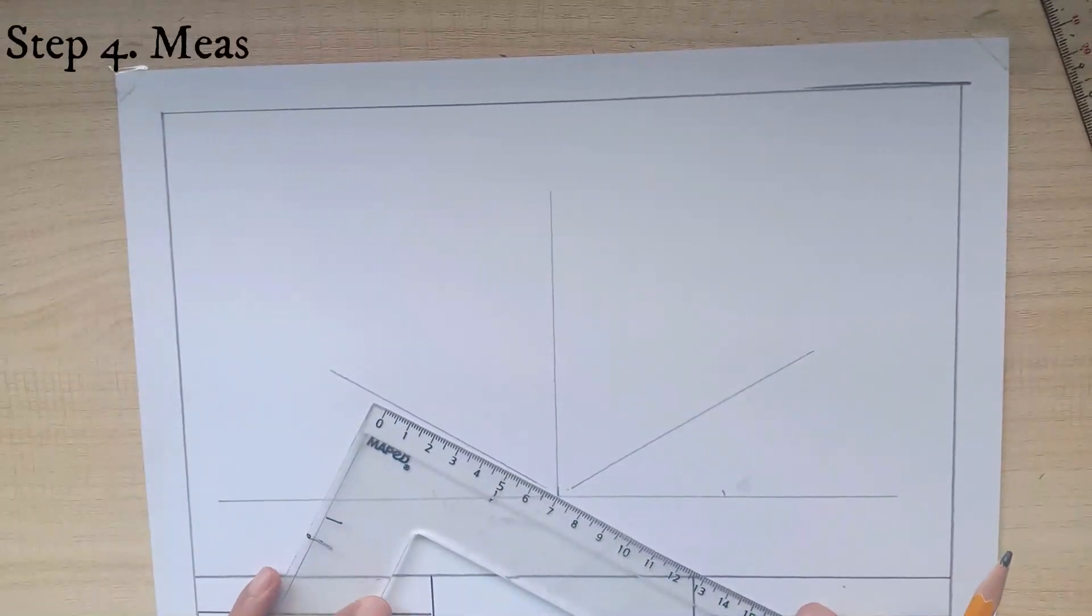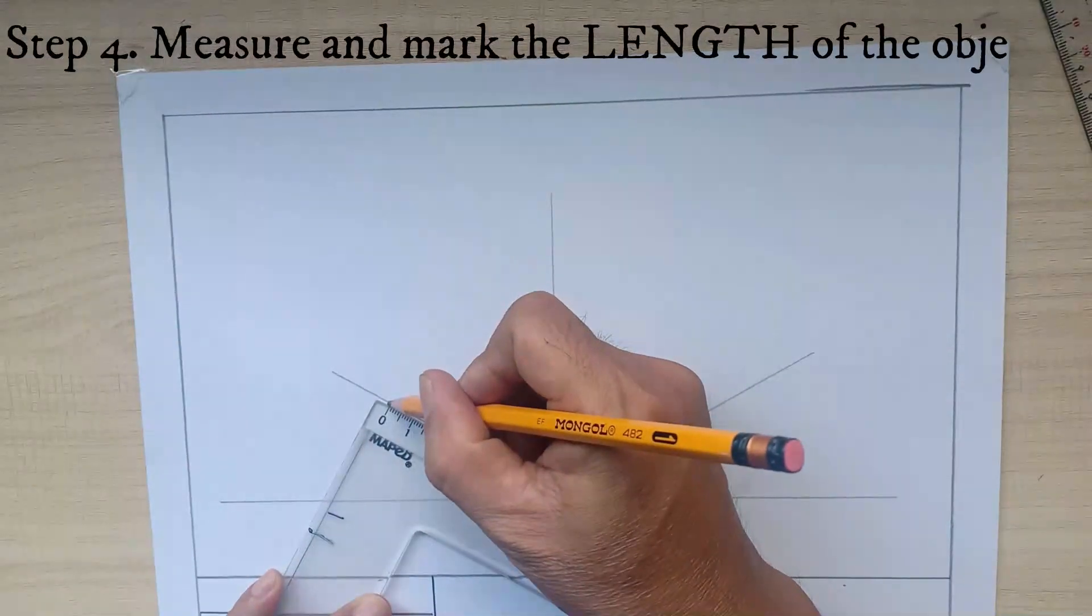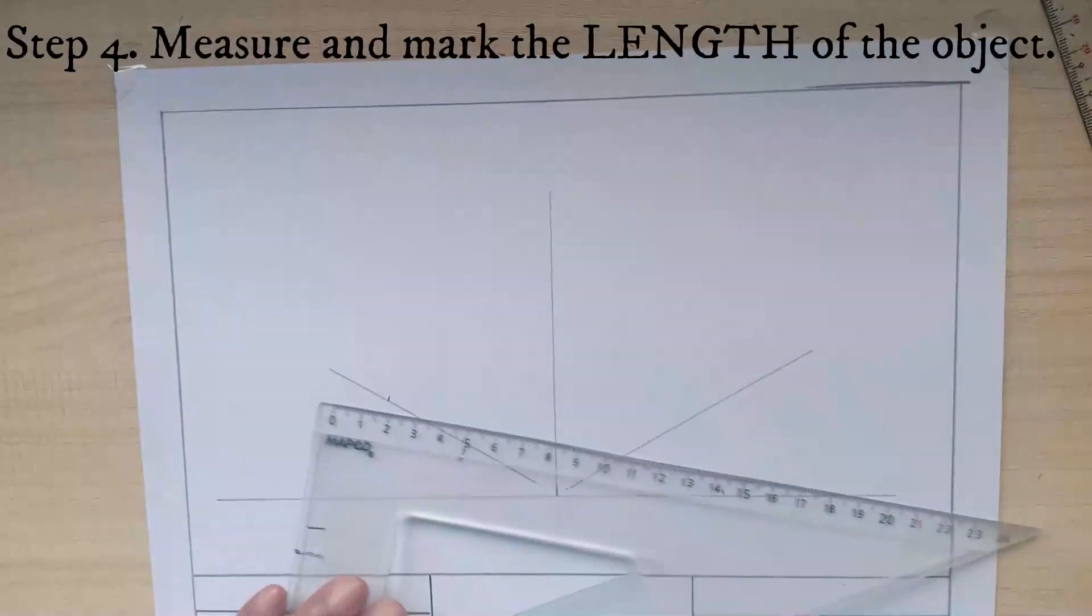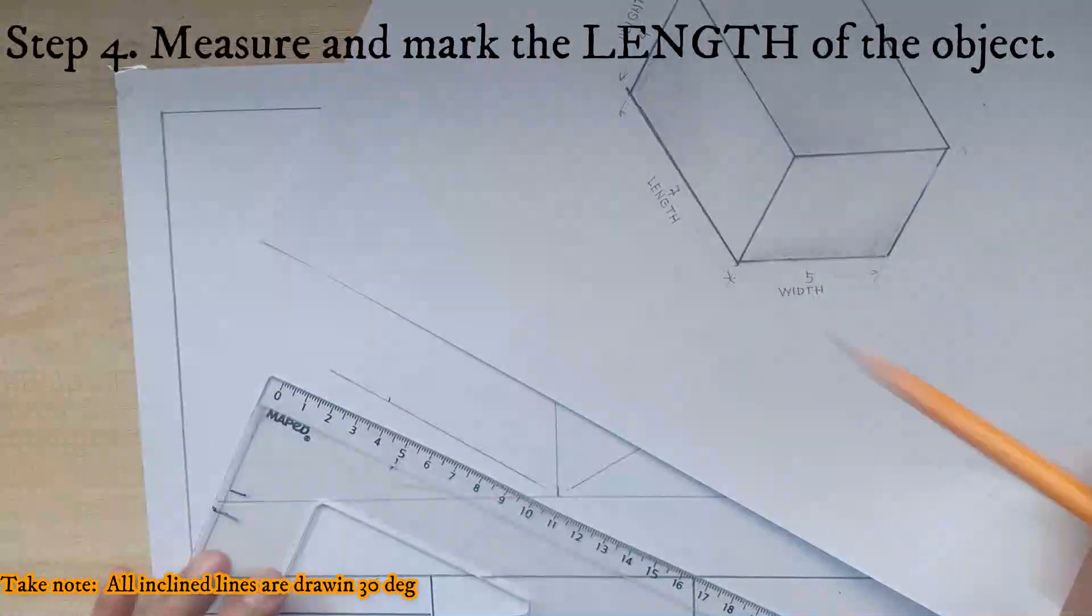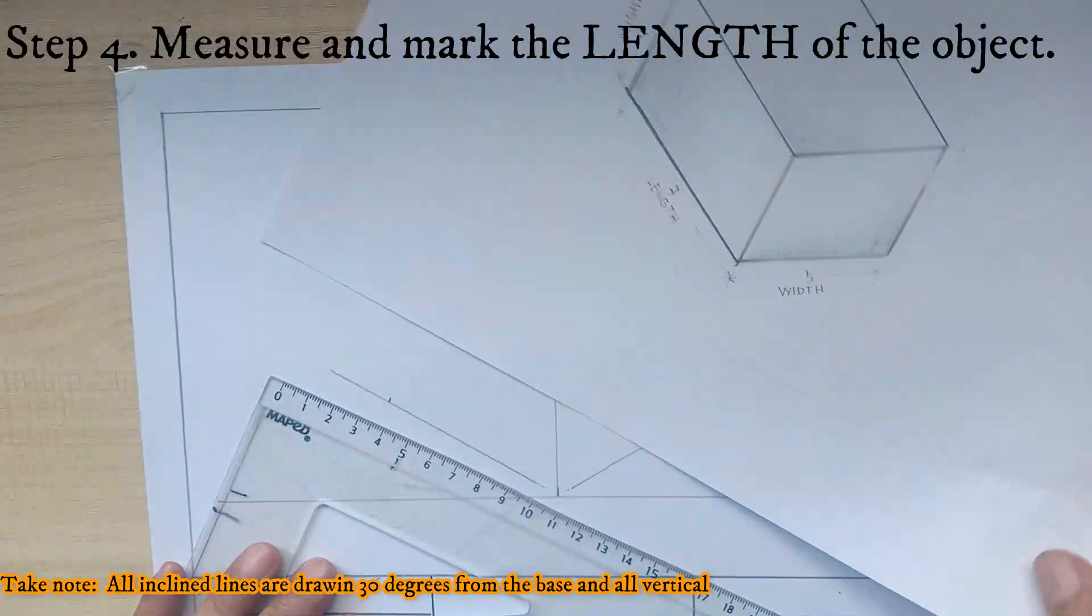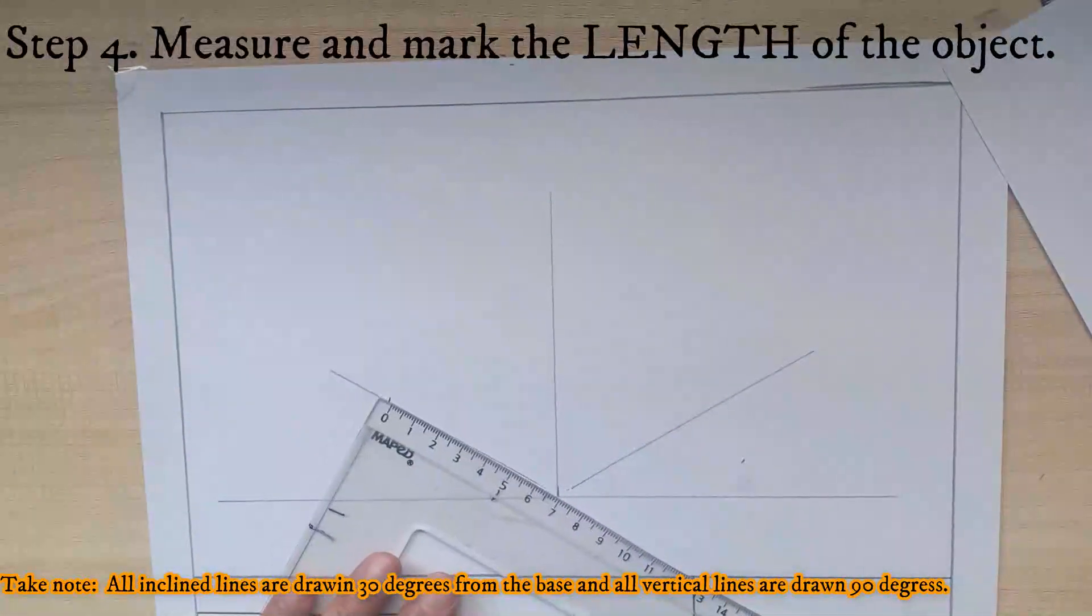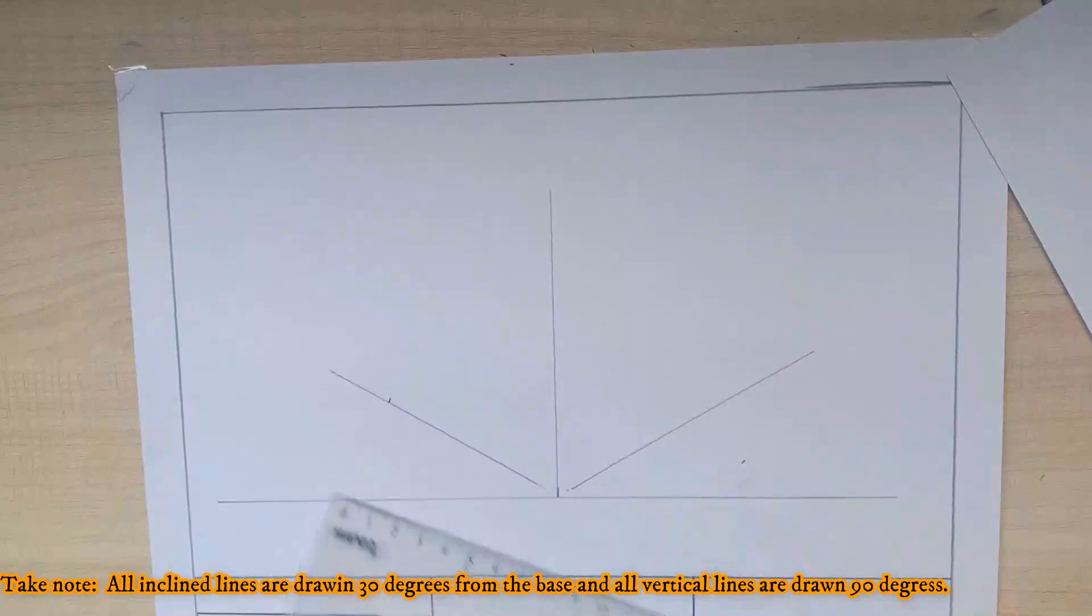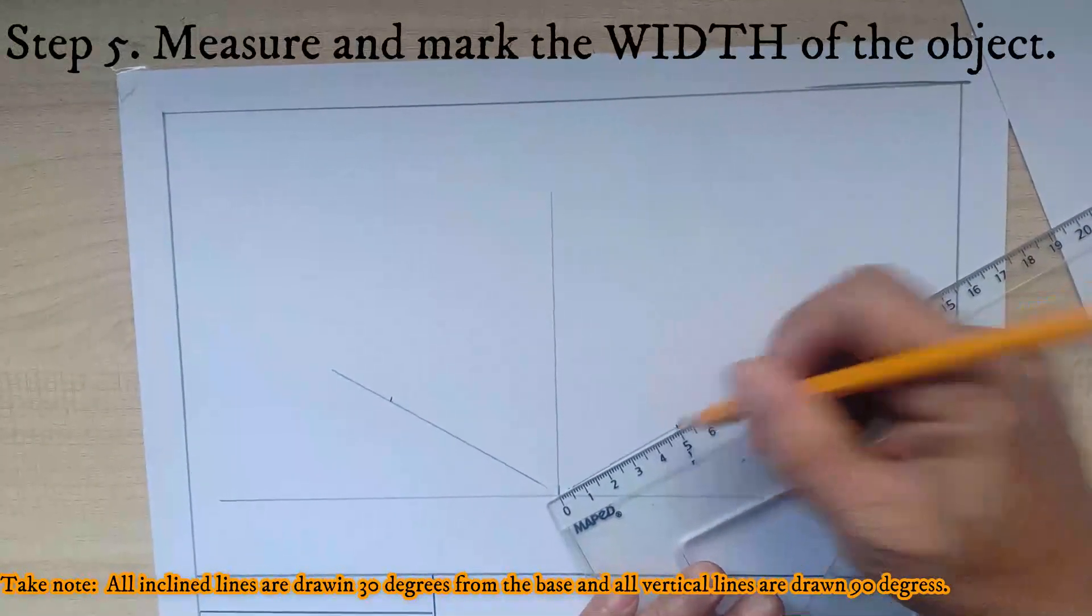The next step is to measure the length of the object which is 7 cm. Then mark the 7 cm which is the length of the object and the width of the object is 5 cm.